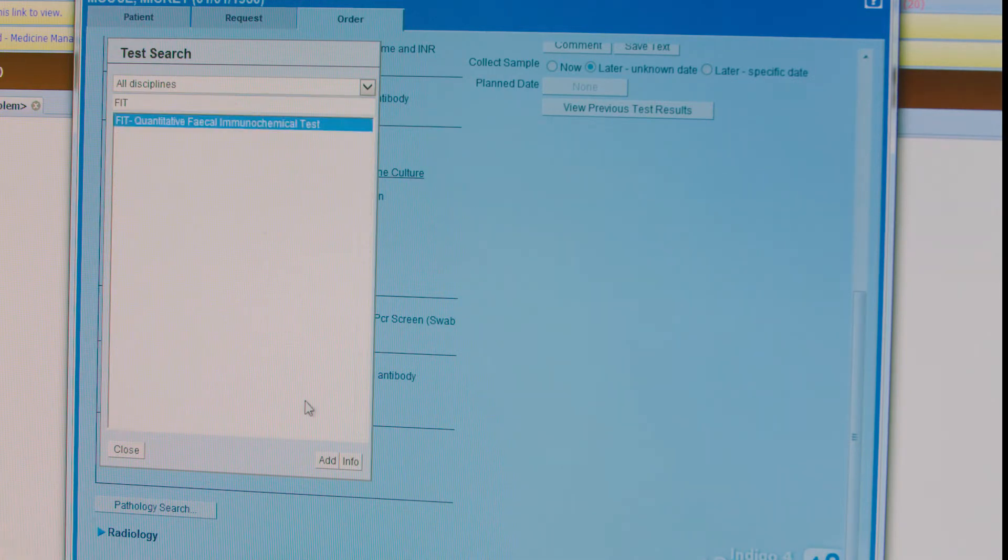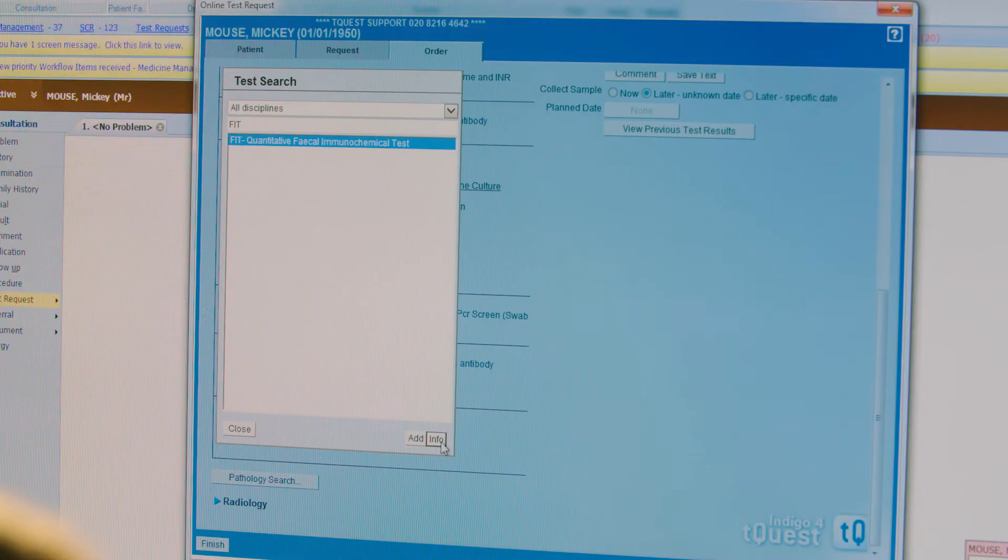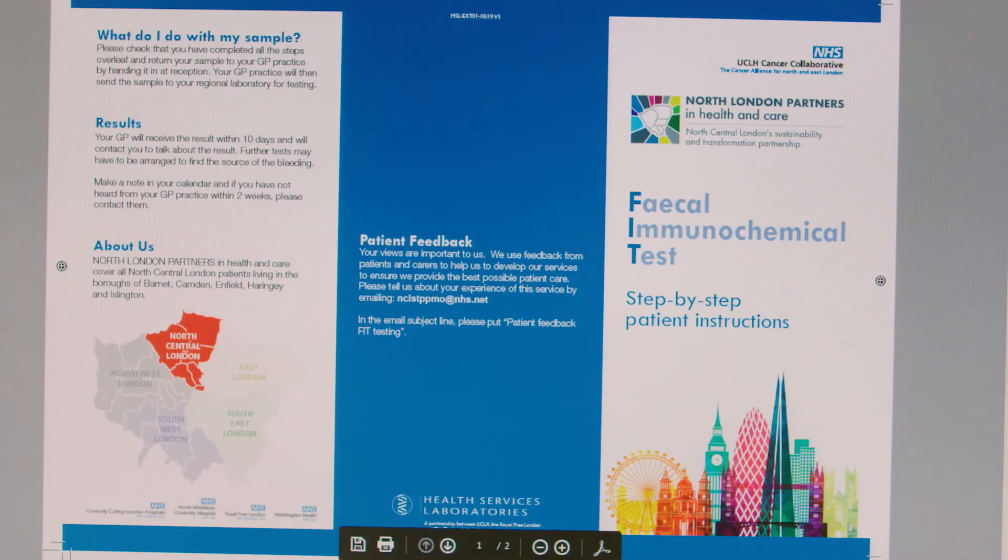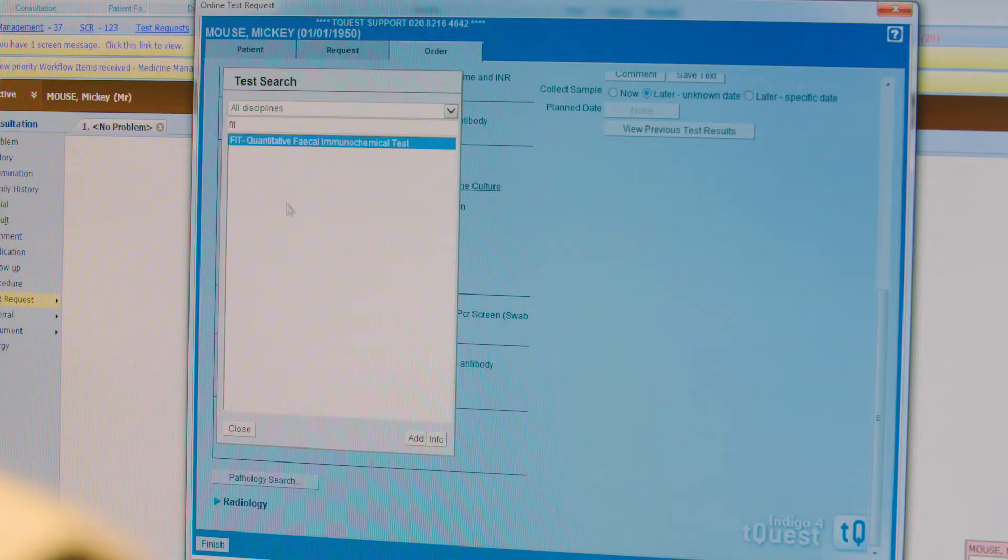At this point, if I'd like, I can press the Info button, and this will bring up a small pop-up box which will take me to a link to the patient information leaflet, which explains to patients how to actually take the sample. Once it's printed, I close this box.